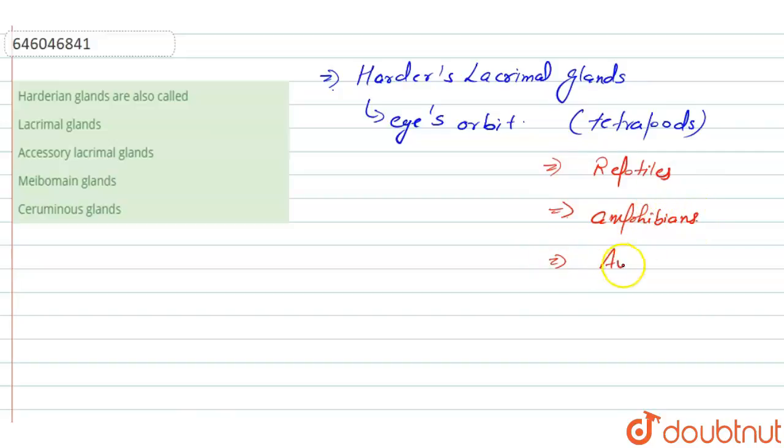As well as in apes and in mammals. So these tetrapods possess the nictating membrane. The eye orbit possesses the nictating membrane.